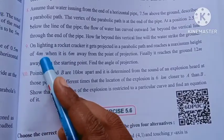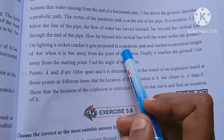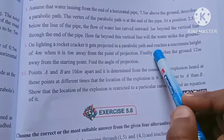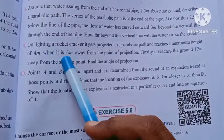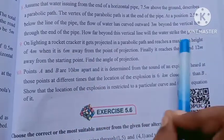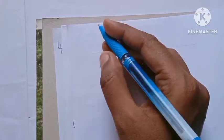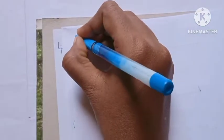What is the question? On lighting a rocket cracker, it gets projected in a parabolic path. It reaches maximum height 4 meters when it reaches 6 meters away from the point of projection, and finally 12 meters away from starting point. Find the angle of projection.